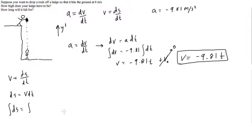So we can say integral of ds is equal to the integral of v which is negative 9.81 t, and this is dt. And again we see negative 9.81, we can move that outside of the integration.